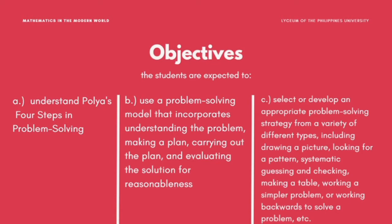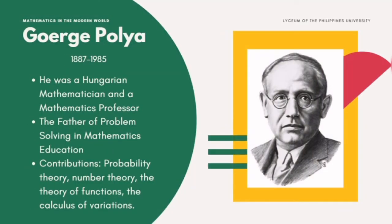So, who is George Polya? George Polya lived from 1887 to 1985. According to him, mathematical problem solving is finding a way around a difficulty, around an obstacle, and finding a solution to a problem that is unknown. He was a Hungarian mathematician and a mathematics professor, and considered as the father of problem solving in mathematics education because of his many contributions in the subject.